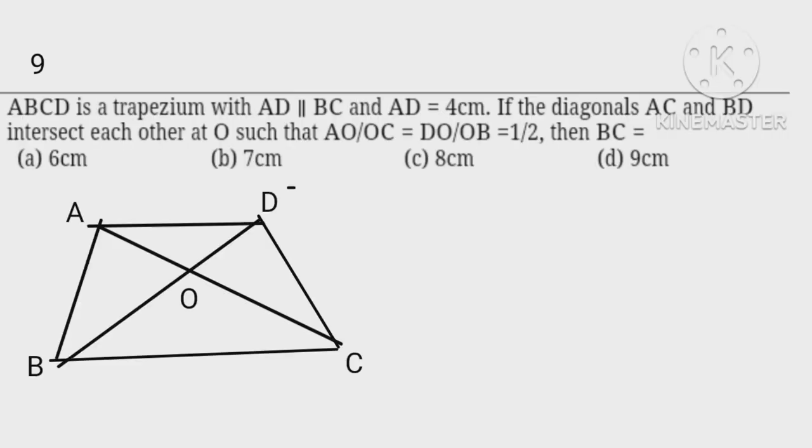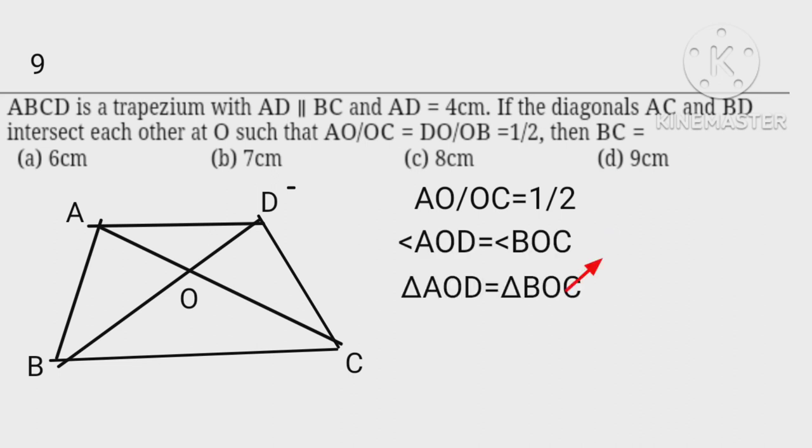In the figure, since AO upon OC equals 1 upon 2 and angle AOC equals angle BOC, therefore triangle AOC is congruent to triangle BOC. Hence AO upon OC equals AD upon BC. So 1 upon 2 equals 4 upon BC, which implies that BC equals 8 centimeters.